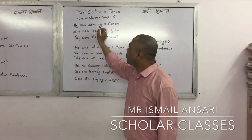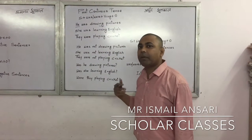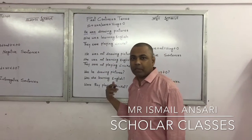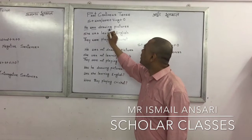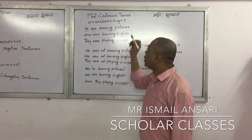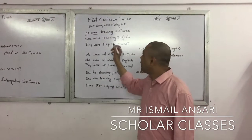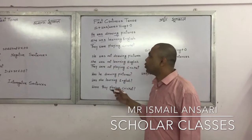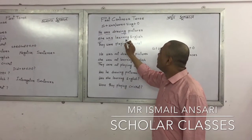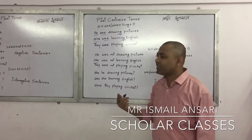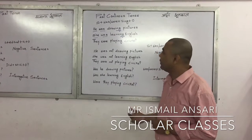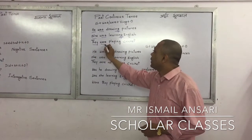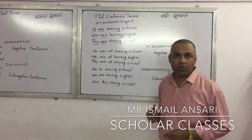'He' is the subject. 'Was' is used to denote the past tense, and '-ing' is used to show the continuity of the tense. Another example: They were playing cricket — 'were' is the helping verb and '-ing' is showing the continuity of the past tense.